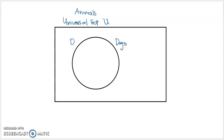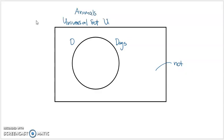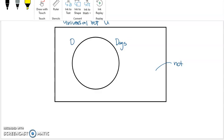What this means is that the set of animals can be divided into essentially two things: the set of all things that are dogs within the circle, and the set of all things that are not dogs outside the circle. So it's not only outside the circle — they're also not dogs. This is the set of things that are not dogs.